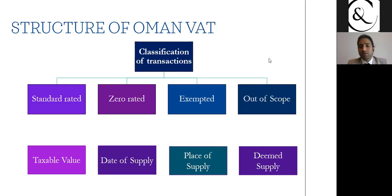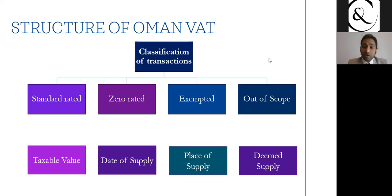You purchase from somewhere and sell to somewhere; you may provide services outside Oman, sell products outside Oman, or have people coming from outside Oman working for your organization based in Oman. There are various combinations in which we need to decide the actual place of supply — where this transaction will be subject to tax.